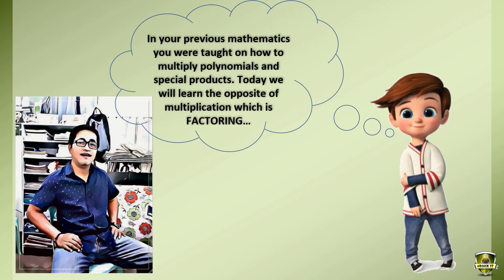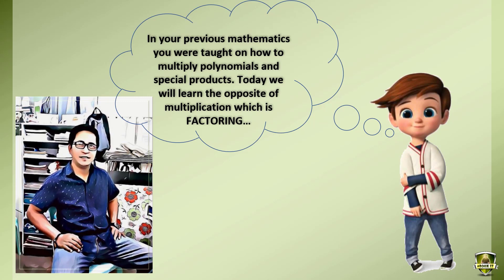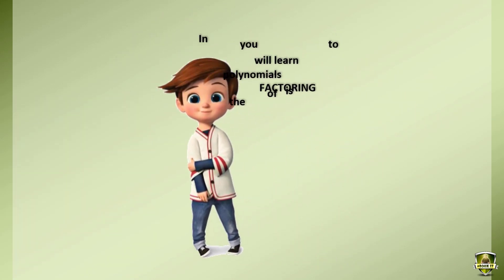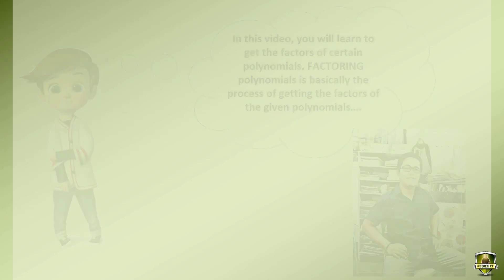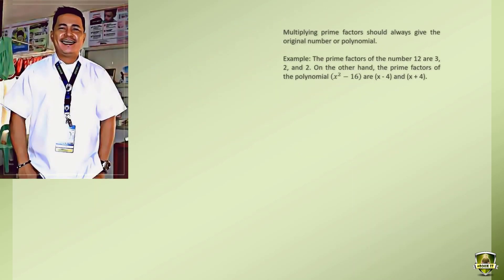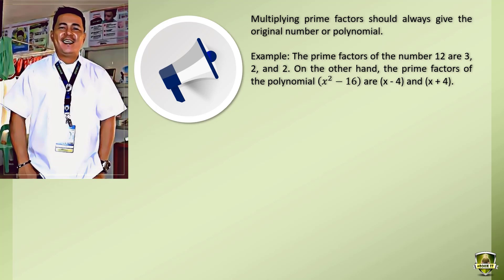In your previous mathematics, you were taught on how to multiply polynomials and special products. Today we will learn the opposite of multiplication, which is factoring. In this video, you will learn to get the factors of certain polynomials. Factoring polynomials is basically the process of getting the factors of the given polynomials. Multiplying prime factors should always give the original number or polynomial.